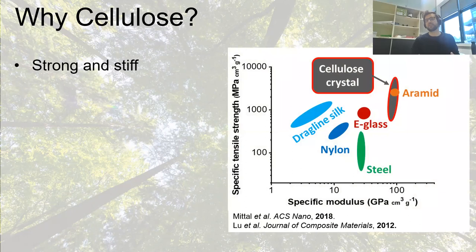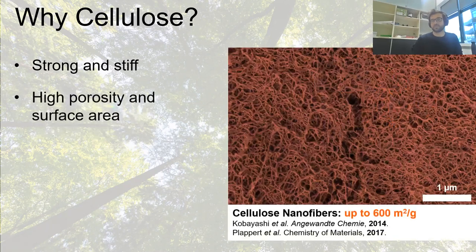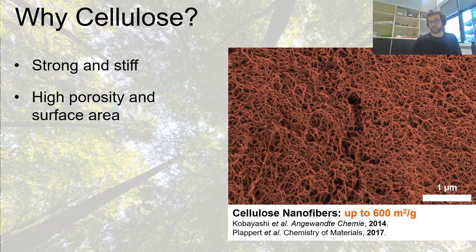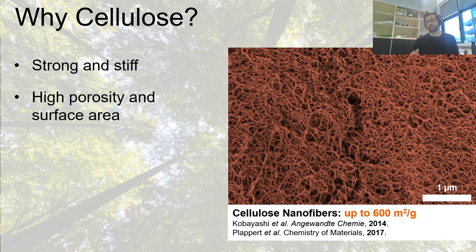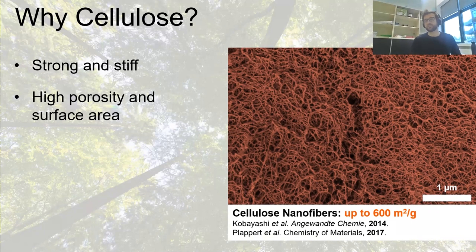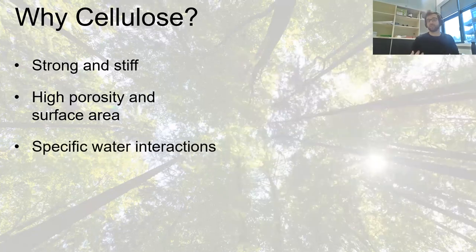Furthermore, cellulose has intrinsic functionality. For example, we can use cellulose nanocrystals to produce coatings with structural color, and we can use cellulose nanofibers to produce hydrogels and aerogels with very high specific surface area. With TEMPO-oxidized nanofibers we can reach values up to 600 square meters per gram. If you imagine 10 grams of this aerogel, it would represent the surface area of a whole soccer field — a huge area, very interesting for thermal insulation and water filtration.